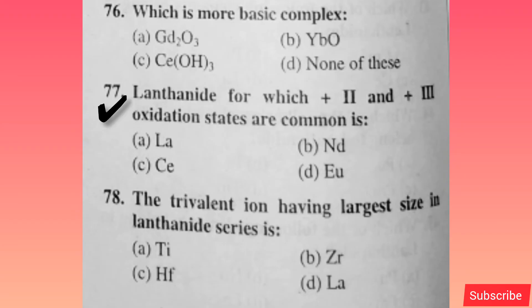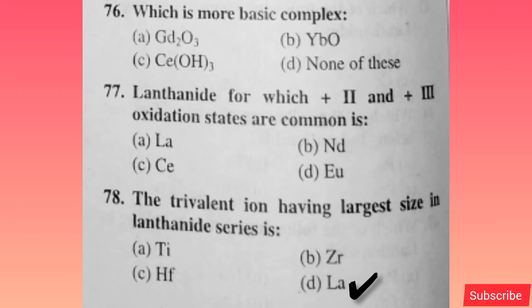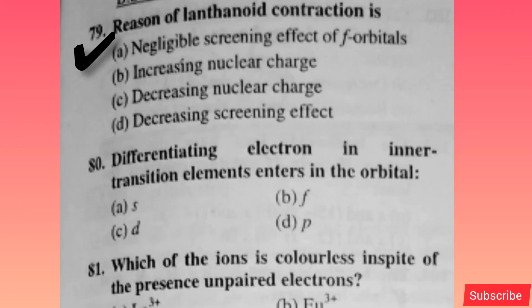The lanthanide for which +2 and +3 oxidation states are common is — option D is correct. The trivalent ion having the largest size in the lanthanide series is — option D is correct. The reason for lanthanide contraction is — option A is correct.